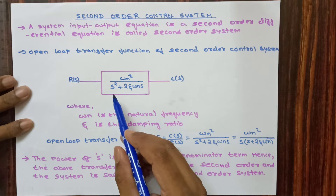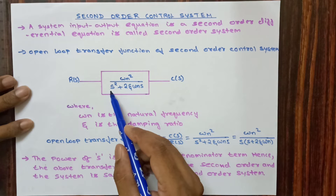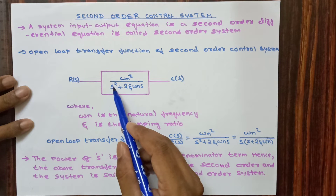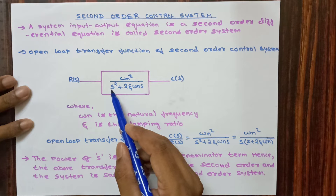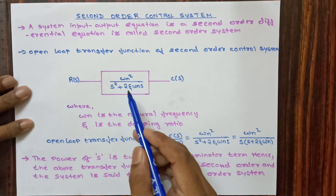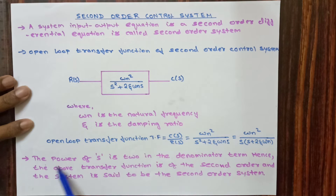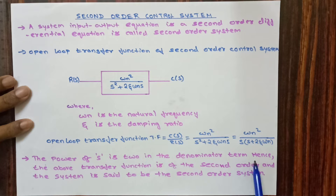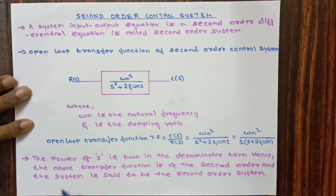The order of the system is determined by the highest power of s in the denominator. In this transfer function, the highest power of s is 2, therefore it is a second order control system. The power of s is 2 in the denominator term, hence the above transfer function is of second order and the system is said to be a second order system.